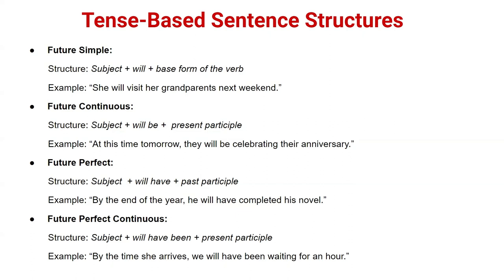Future perfect structure: subject + will have + past participle (third form of a verb). For example: 'By the end of the year, he will have completed his novel.' Here 'he' is the subject, 'will have' is used, and 'completed' is the third form of 'complete.' You could also say 'he will have written his novel' — 'written' is the third form of 'write.'